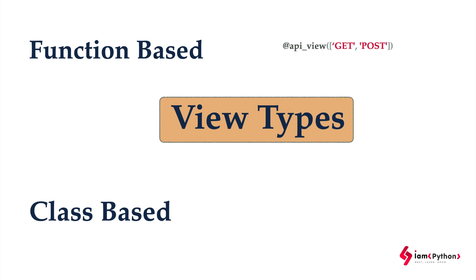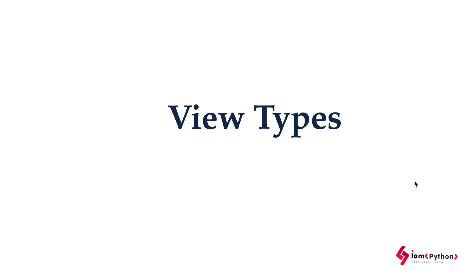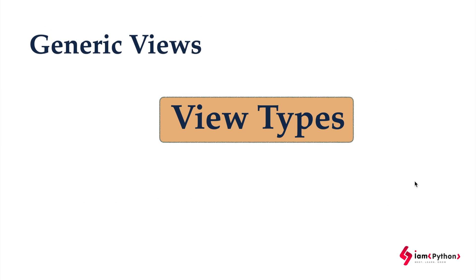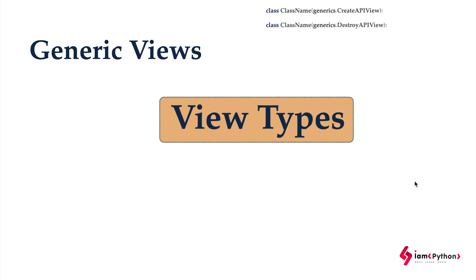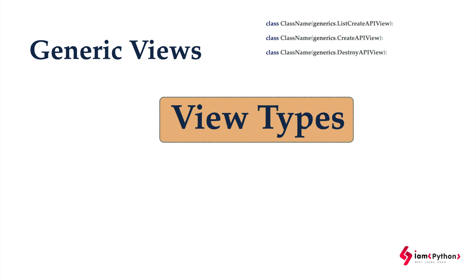The next type is class-based views. When you want to implement class-based views in your project, you have to create a class, and that class must inherit from the APIView class. This is object-oriented programming — your class must inherit from APIView.